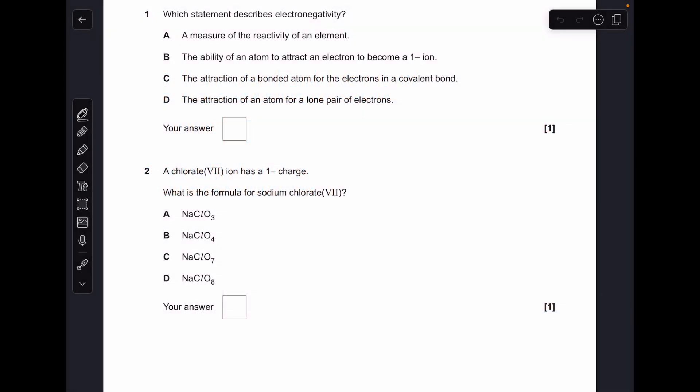Okay, so let's make a start. Question one is just a test of your memory basically. So what's the definition for electronegativity? It's option C, the attraction of a bonded atom for the electrons in a covalent bond.